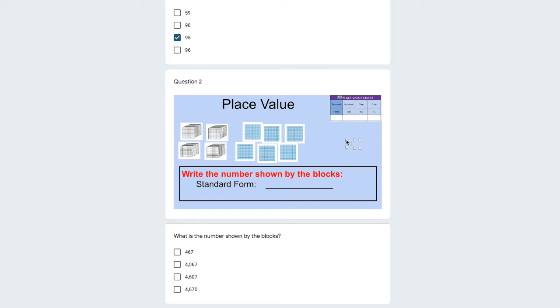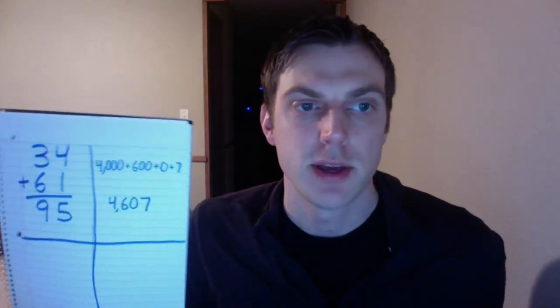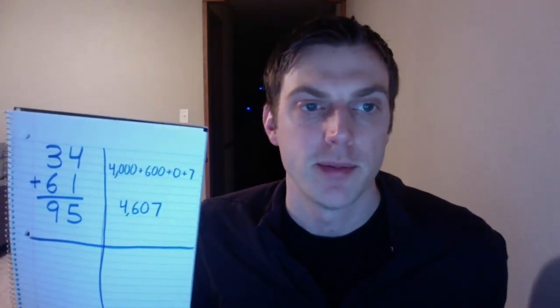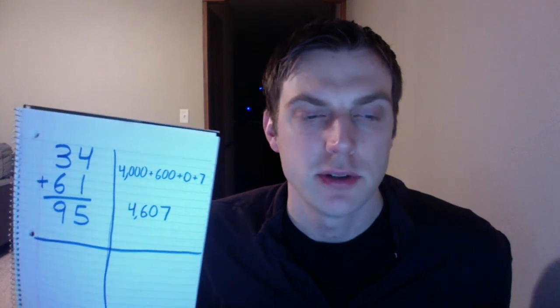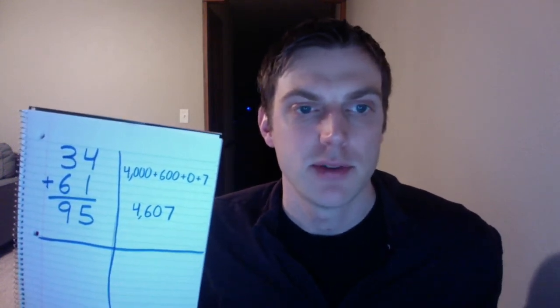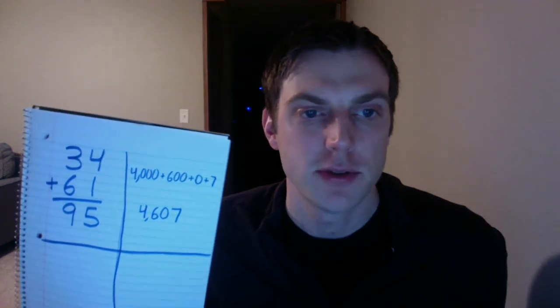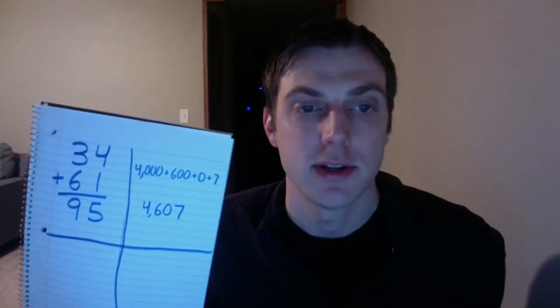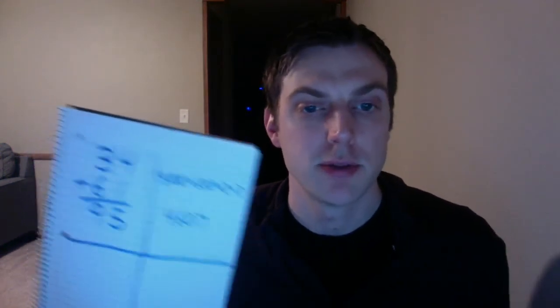And if I look at the ones place, I can count 1, 2, 3, 4, 5, 6, 7. So after counting the blocks, I wrote it down in expanded form to show my work. I found that there was 4,000 plus 600 plus 0 tens plus 7 for a total of 4,607. Let's see if that's one of the answer options.